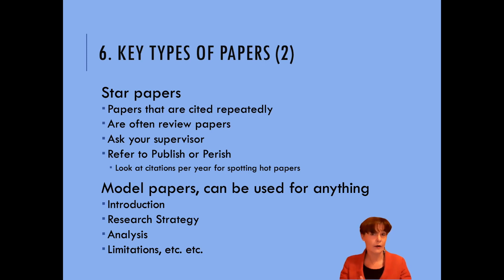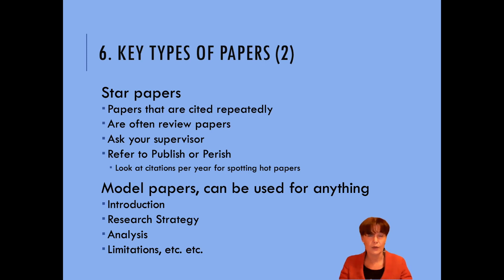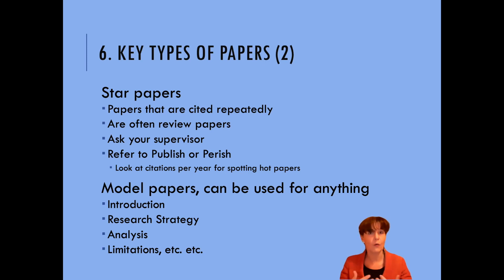Journal articles that have only been published two or three years ago but already have a lot of citations are what we call hot papers. These are papers that have really stumbled upon a topic that's particularly important. So when you do trial searches in Publish or Perish, also try to find the column for citations per year. I'll show you how to do this if you haven't figured it out yet.